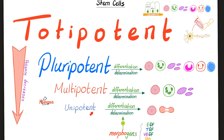Unipotent can only differentiate into one type of cell only. For example, cells responsible for making just red blood cells — that's a unipotent. Uni means one; potent means strong or capable. Multipotent means many: it can give you red blood cells, platelets, and neutrophils.